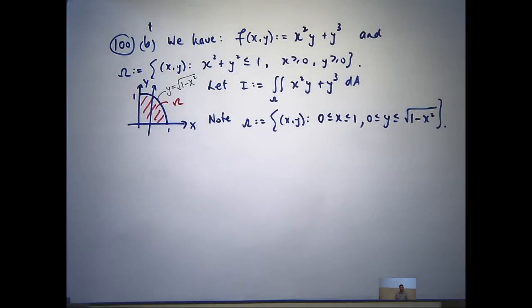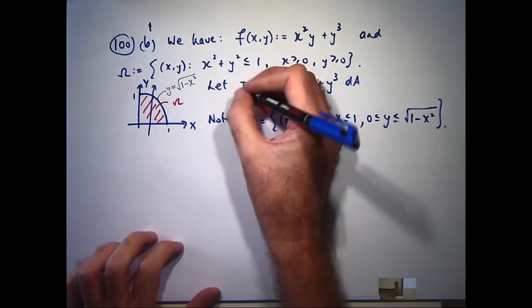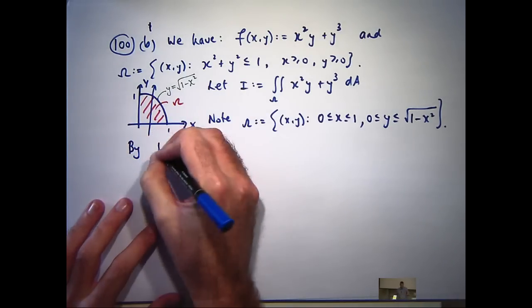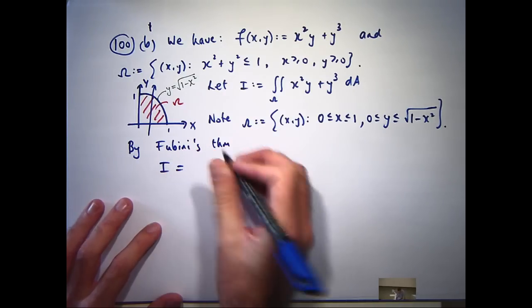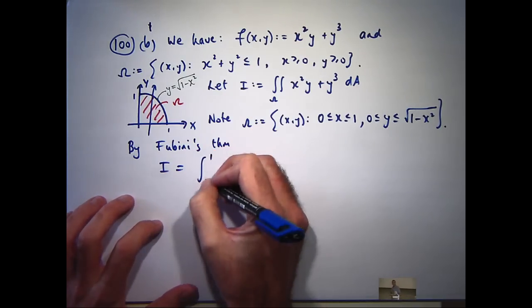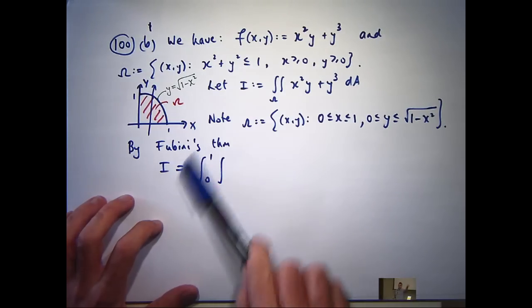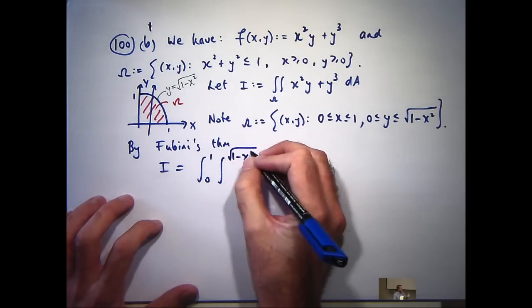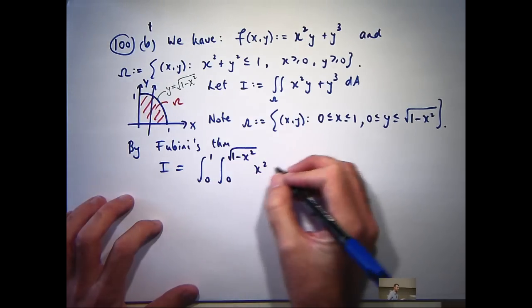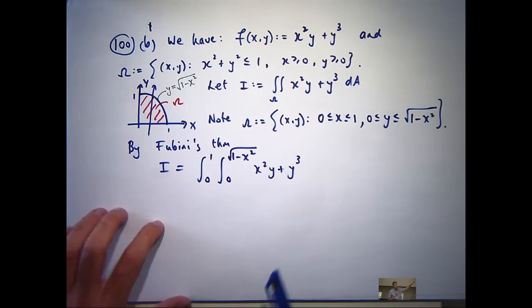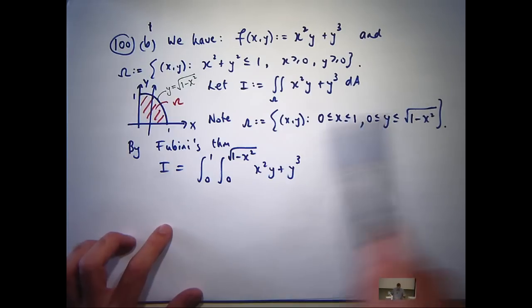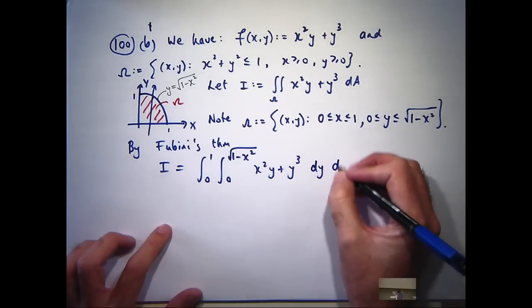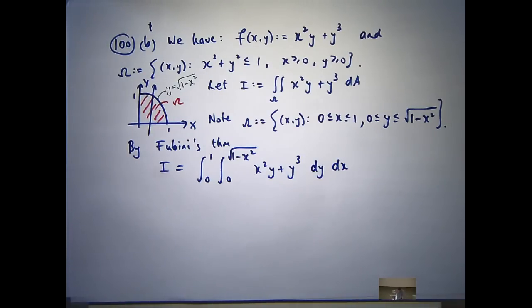OK, so now what we want to do is put this into a double integral. We know that we can use Fubini's theorem to write I as a repeated integral. So by Fubini's theorem, I is just the following iterated integral. Remember, the constants go on the outside. Now, is it dy dx or dx dy? dy dx, because y is between these two functions and they're on the inside.